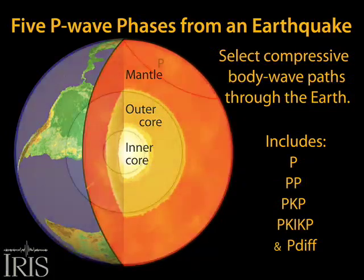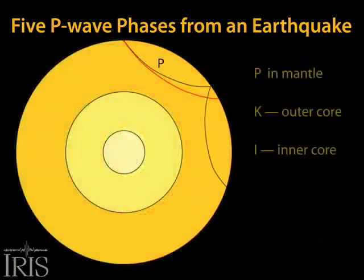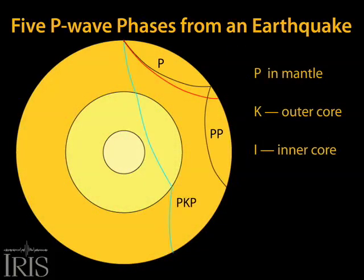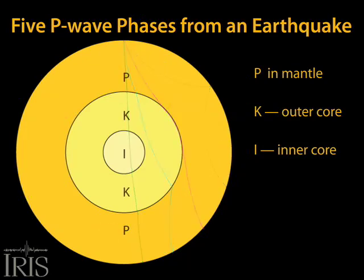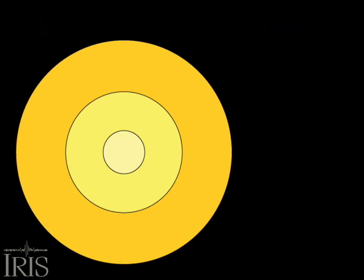This animation addresses five common variations of P-type seismic body waves. All are compressive waves that travel through the mantle in all directions away from the epicenter of an earthquake. The additional letters refer to travel in the mantle and outer and inner core.